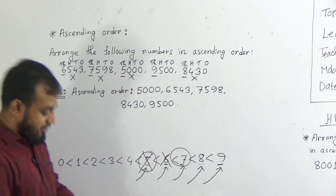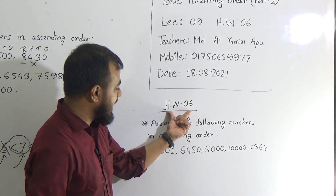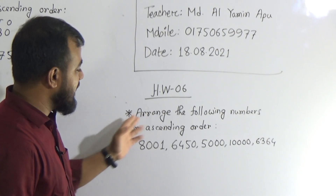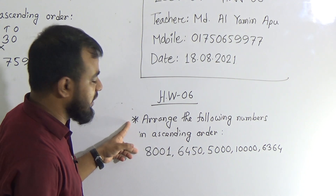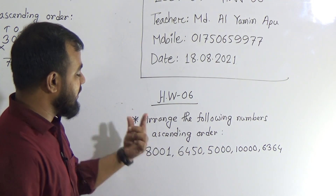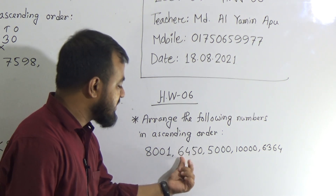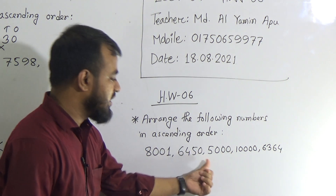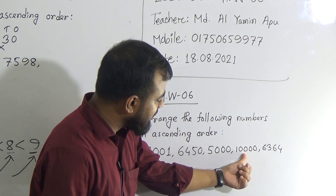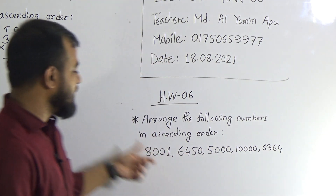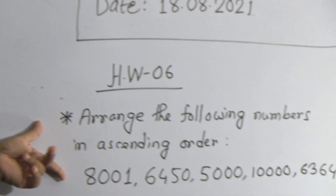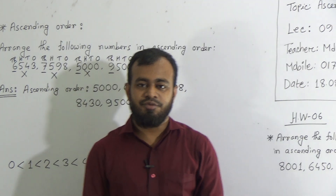I think you have understood, my students. You have a homework today — your homework number is 6. This is your homework question: arrange the following numbers in ascending order. Only do this one as your homework. The first number is 8,001, second number is 6,450, third number is 5,000, fourth number is 10,000, and the last one is 6,364. Please do your homework in your assigned homework copy and you can submit all of your homework every Saturday from 9 a.m. to 3 p.m.